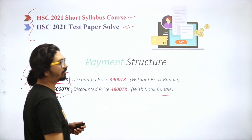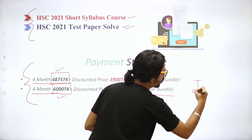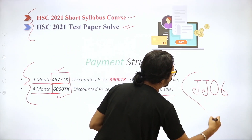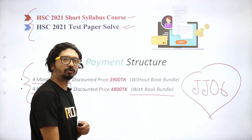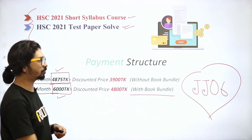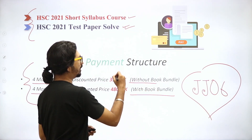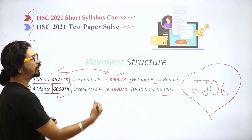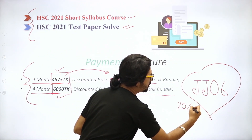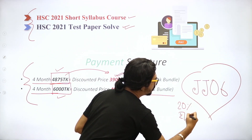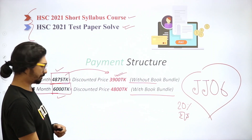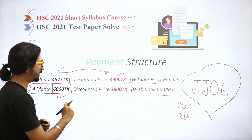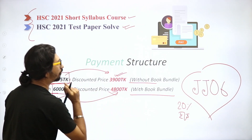Now, we have our coupon code JJ06 — a discount code for you. Using this coupon code: one course is priced at 39,000, another at 20,000, and another at 4,000.